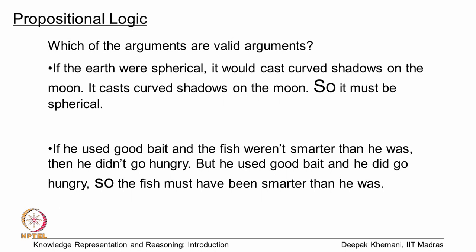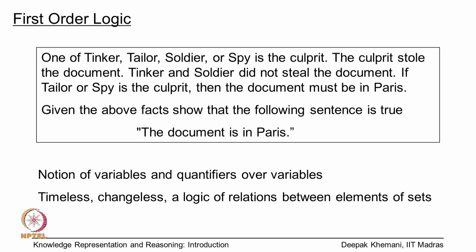There is a whole variety of languages that we use, starting with propositional logic. Here are two examples: if the earth was spherical, it would cast curved shadows on the moon; it cast curved shadows on the moon, so it must be spherical. Another example: if he used good bait and the fish weren't smarter than he was, then he did not go hungry; but he used good bait and he did go hungry, so the fish must have been smarter than he was. Only one of these is a valid argument — I will leave it for you to think about.